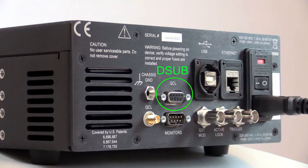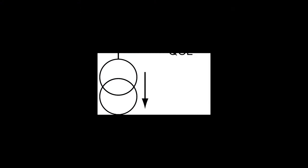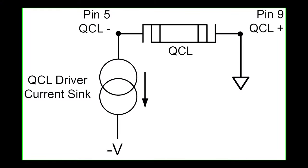The QCL instrument operates as a negative voltage supply current sink. Load current sources from the system ground through the QCL load where it is regulated by the negatively biased controller. With the traditional laser, this is commonly called grounded anode operation.